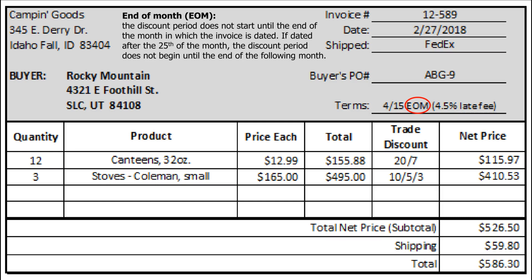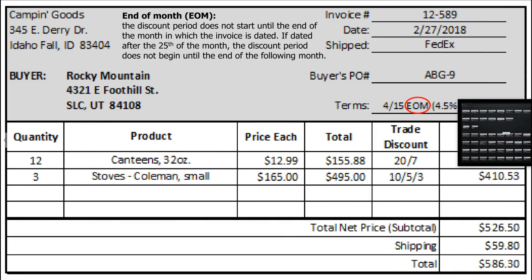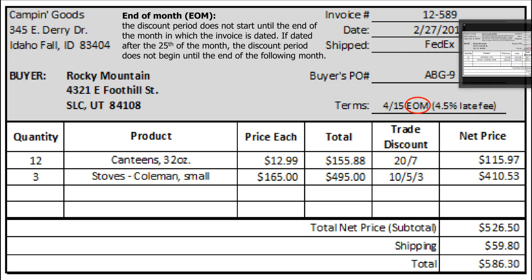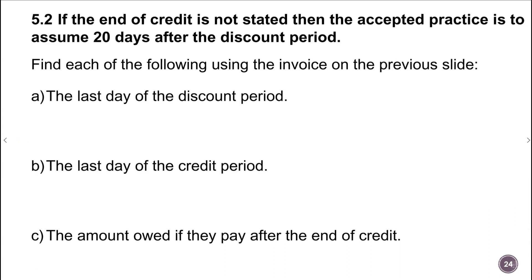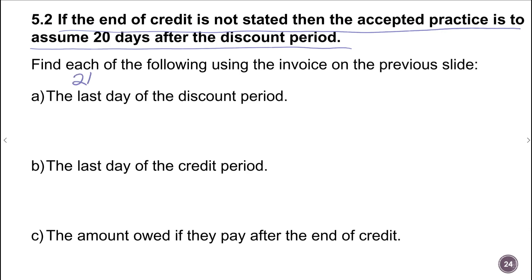Since this invoice is dated February 27th, that means we're going to have an EOM of 3/31 — the end of March. Also notice that it doesn't tell us anything about 'net.' When that happens, the accepted practice is to extend or add 20 days to the end of your discount period. So we go with 2/27/18, which is after the 25th, so we go to 3/31/18 and figure our discount period from there.